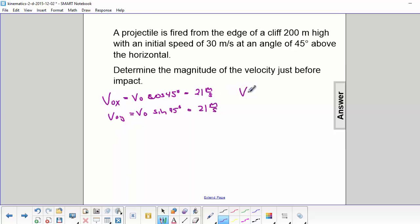The velocity in the x direction stays the same at 21 m/s. But for the velocity in the y direction, we have to use v₀y - gt.